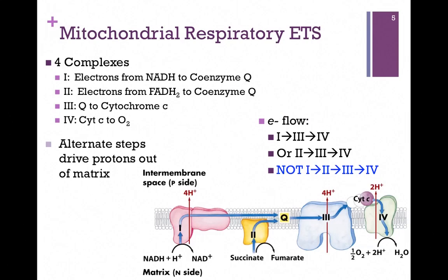Here are the four main complexes in the electron transport chain. Complex 1 takes electrons from NADH and passes them eventually to coenzyme Q. Complex 2 takes electrons from FADH2 and also passes them to coenzyme Q. Complex 3 takes electrons from Q and passes them to cytochrome C. Cytochrome C passes them to Complex 4, which then passes them finally to oxygen. At alternate steps, we pump protons. Electron flow is either from Complex 1 to 3 to 4, or from Complex 2 to 3 to 4.